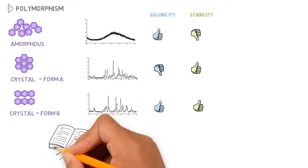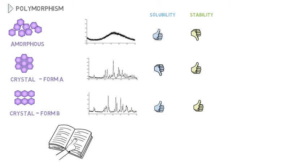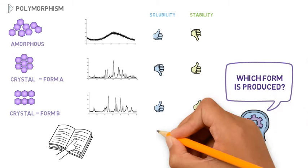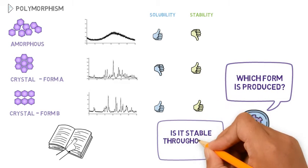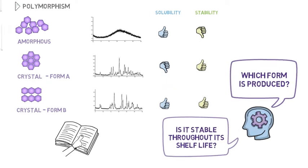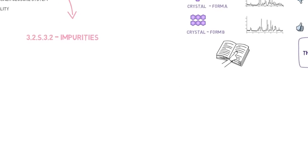In case different polymorphic forms have been described in the literature, the manufacturer needs to discuss the different forms and prove which one is produced, showing also if it is stable and does not convert into another form throughout its shelf life.